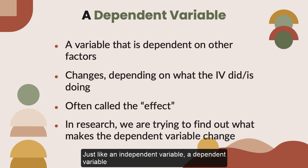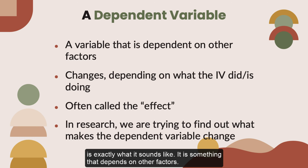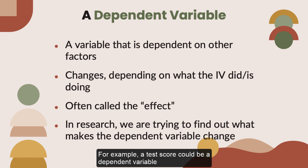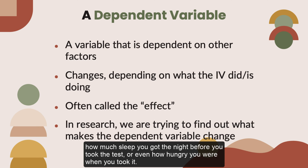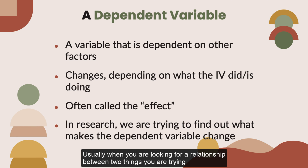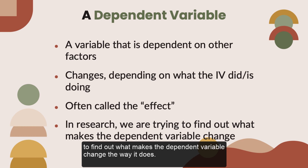Just like an independent variable, a dependent variable is exactly what it sounds like — it's something that depends on other factors. For example, a test score could be a dependent variable because it could change depending on several factors such as how much you studied, how much sleep you got the night before you took the test, or even how hungry you were when you took it. Usually, when you are looking for a relationship between two things, you're trying to find out what makes the dependent variable change the way it does.